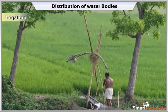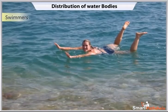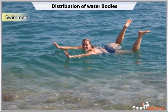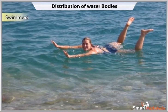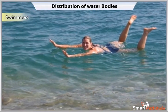Do you know the Dead Sea in Israel has a salinity of 45 parts per 1000? Swimmers can float in it because the density of its salty water is more than that of the human body.